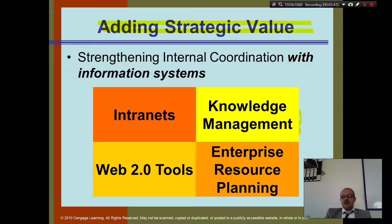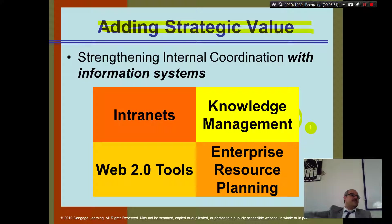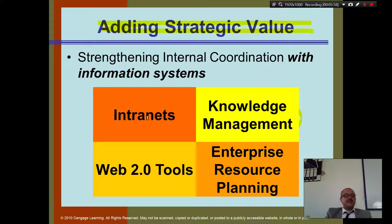The third level is strategic value: intranet, knowledge management, and ERP. Do you know the difference between these? Do you know what an intranet is? Intranet is a network that is local.